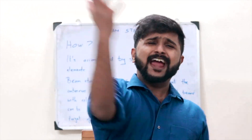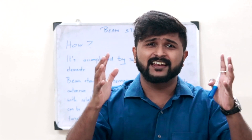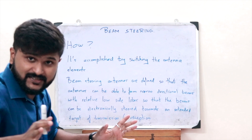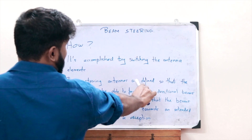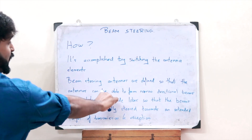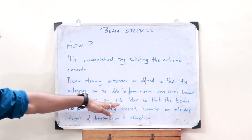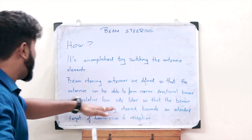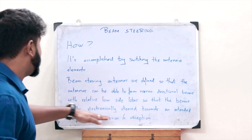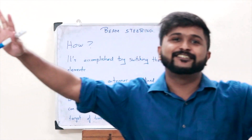Why do we need beam steering antennas? Beam steering antennas are designed so that antennas can form narrow directional beams with relatively lower side lobes, so that the beams can be electronically steered towards an intended target of transmission and reception.